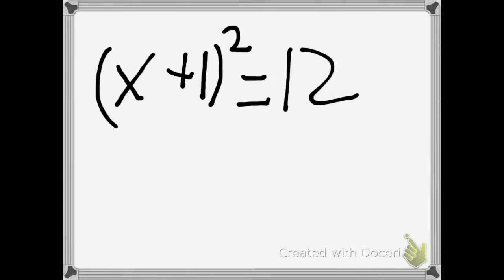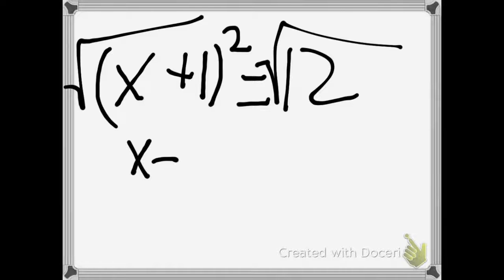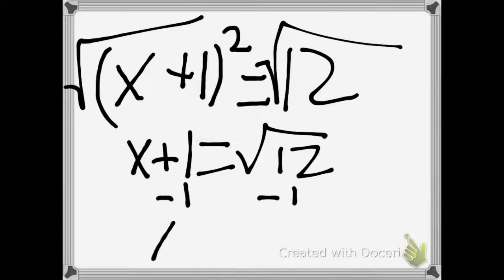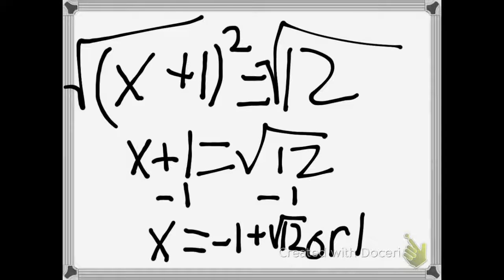So for this equation we would square root both sides, giving us x plus 1 equals the square root of 12. Now we just need to get x alone by subtracting x from both sides. That gives us x equals negative 1 plus the square root of 12 or negative 1 minus 12. Very important you put that or.